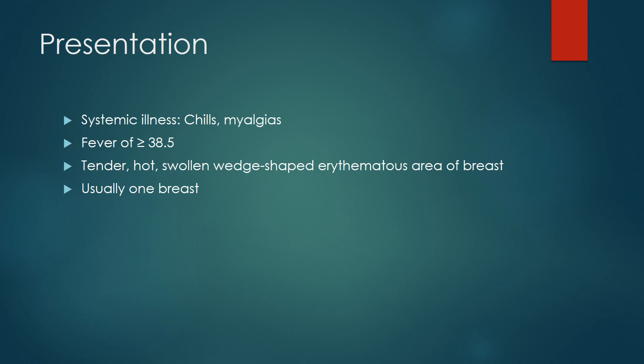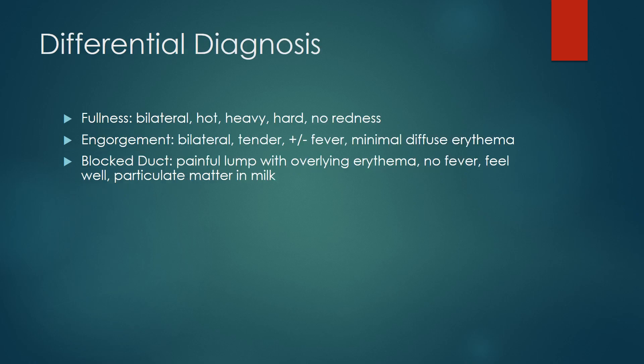Mastitis presents with systemic illness including chills, myalgia, fever, and a tender, hot, swollen, wedge-shaped erythematous area of the breast, usually on one side.